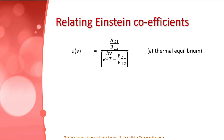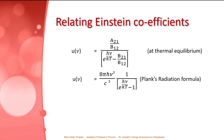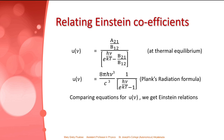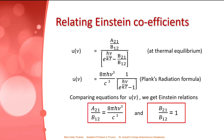At thermal equilibrium, the energy density u(ν) equals (A21/B12) / (e^(hν/kT) − B21/B12). By Planck's radiation formula, u(ν) = (8πhν³/c³) · 1/(e^(hν/kT) − 1). Comparing these two expressions for u(ν), we get the Einstein relations: A21/B12 = 8πhν³/c³, and B21/B12 = 1, which implies B21 = B12.